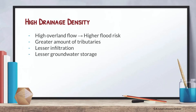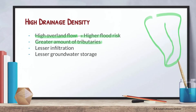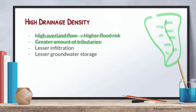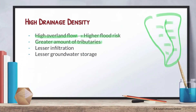Like any other density-based concept, there's high and low drainage density. A high drainage density would basically mean there will be high overland flow, hence higher flood risk. There'll be a greater amount of tributaries — it goes very far with a lot of tributaries branching out. Looking at the formula, if the basin area is slightly smaller but the total length is bigger, the overall drainage density will be higher.